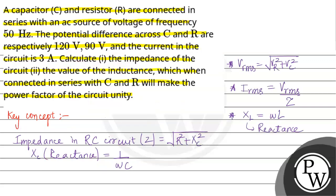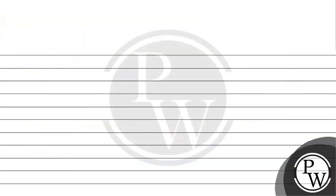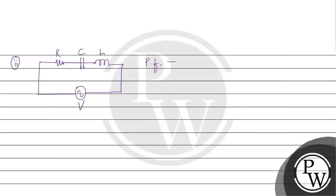The second part asks for the inductance value so that the power factor becomes unity. Power factor unity means the circuit is at resonance. At resonance condition, XL equals XC, meaning omega L equals 1 by omega C, so L equals 1 by omega squared C.